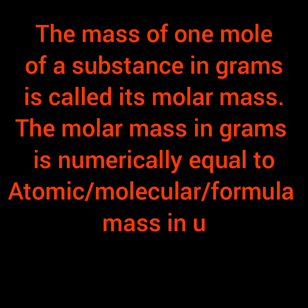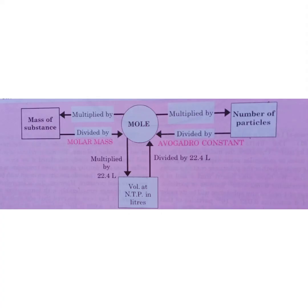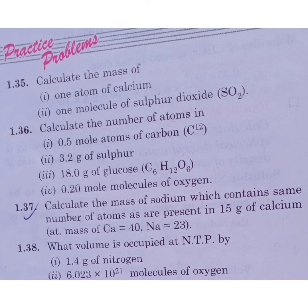The mass of 1 mole of a substance in grams is called its molar mass. The molar mass in grams is numerically equal to the atomic or molecular formula mass in units. 1 mole also contains 22.4 liters at STP — it is the volume occupied at STP.